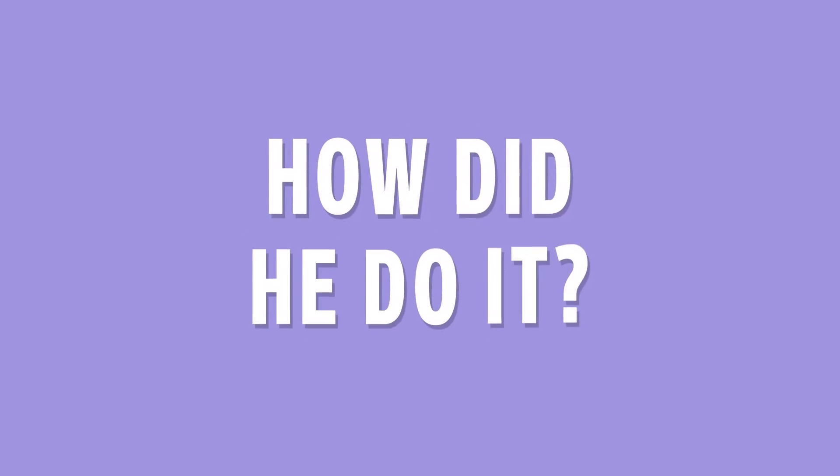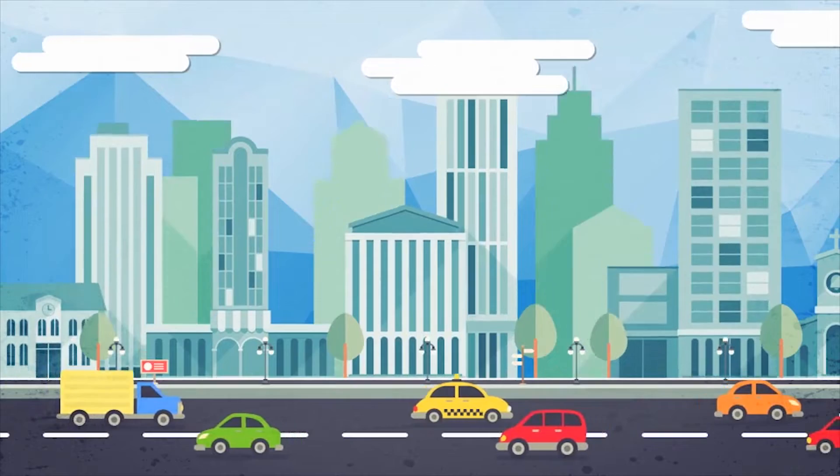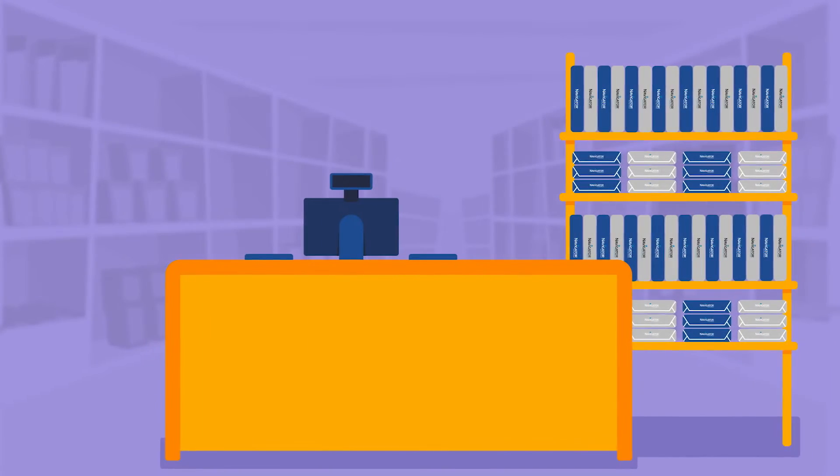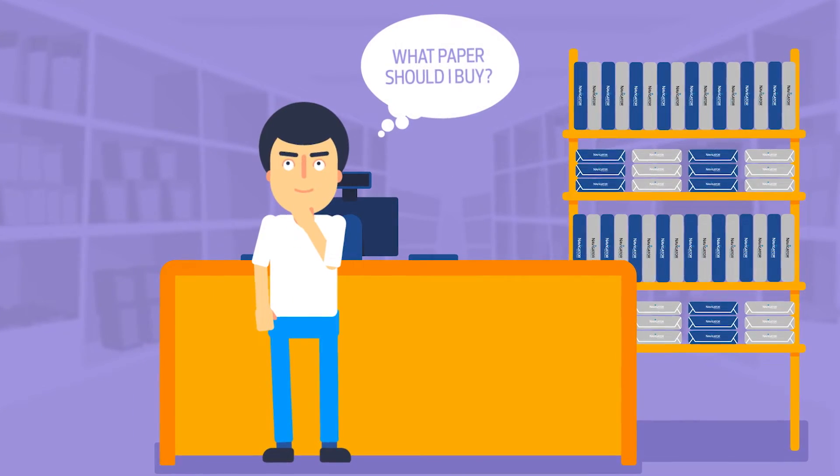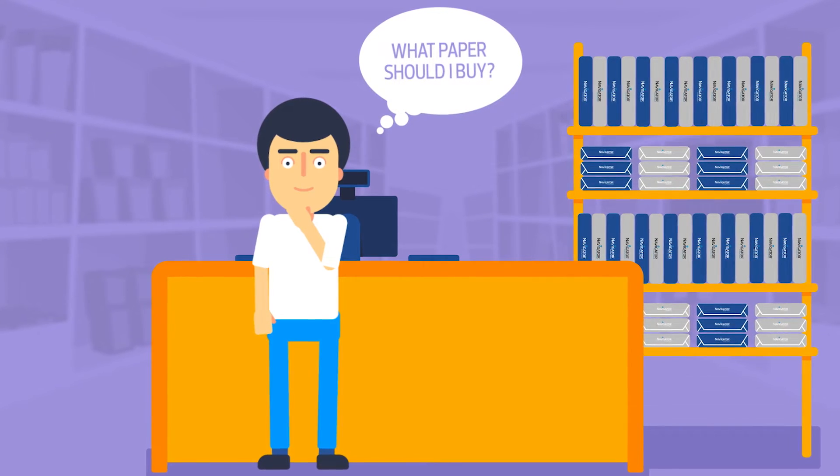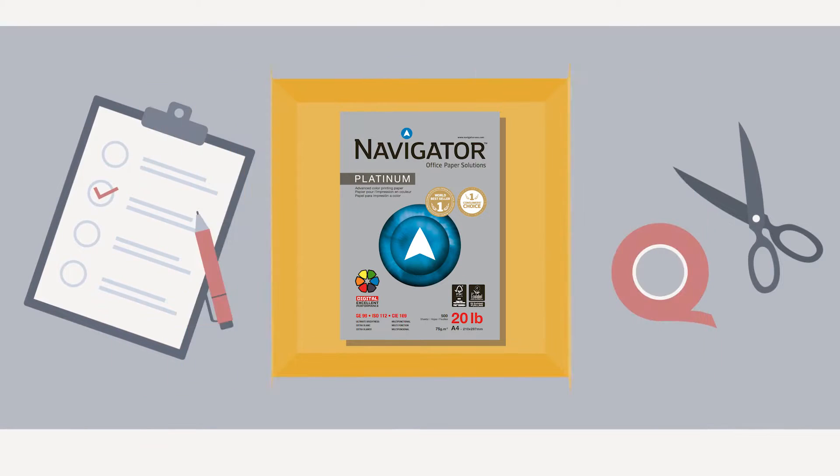How did he do it? Well, it all started one afternoon at his regular office supply store. Tom was looking for an office paper to fit all his printing needs. That was when Navigator Digital Platinum Paper caught his attention.